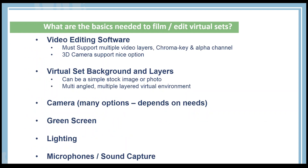What are the basics you need to film and edit virtual sets? The first thing you need is video editing software that supports multiple video layers and can do chroma key and alpha channels. If you have software that does it, having a 3D camera in the software is a really nice option. Today we'll be using After Effects, which does have a 3D camera.